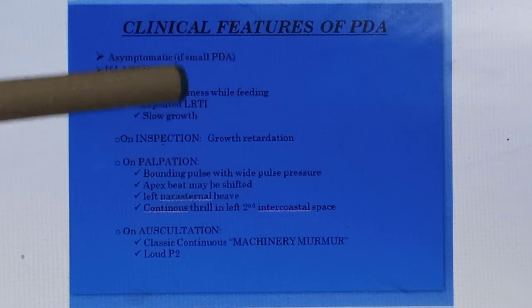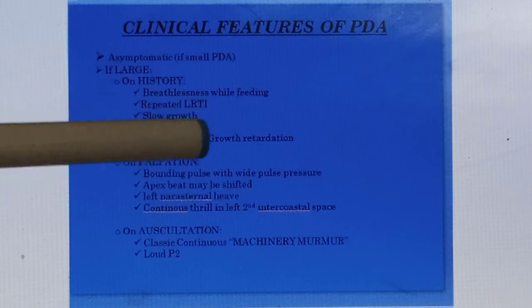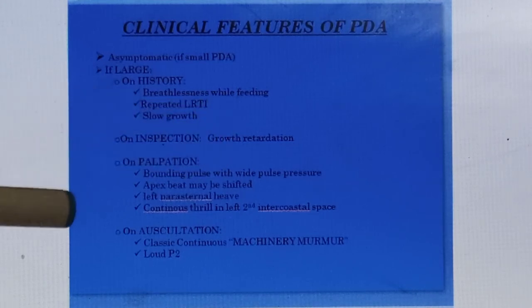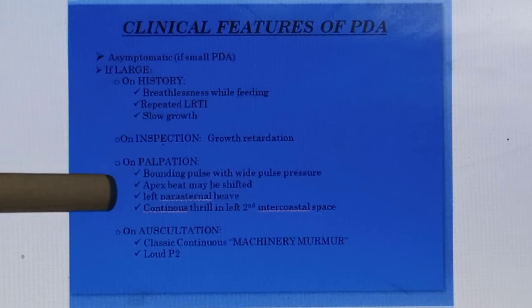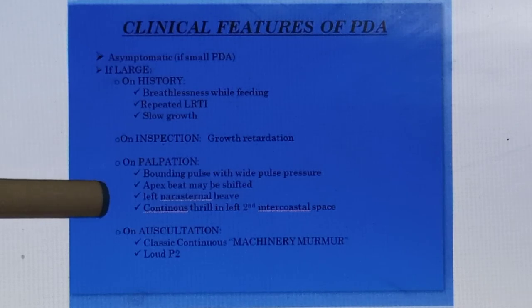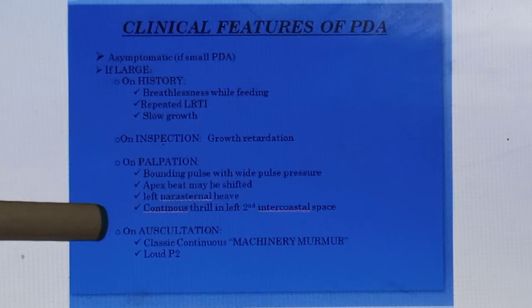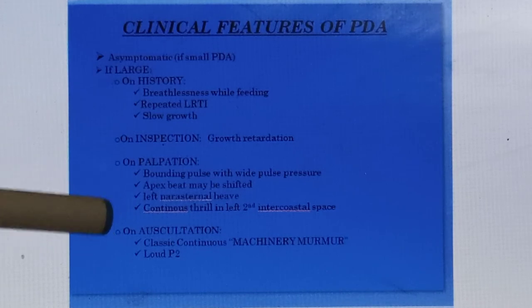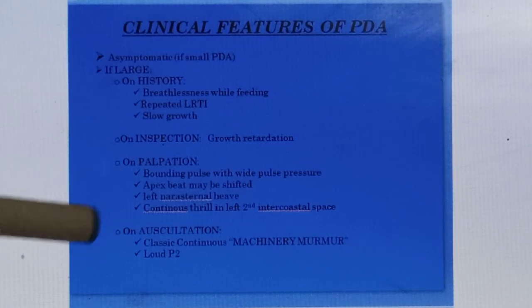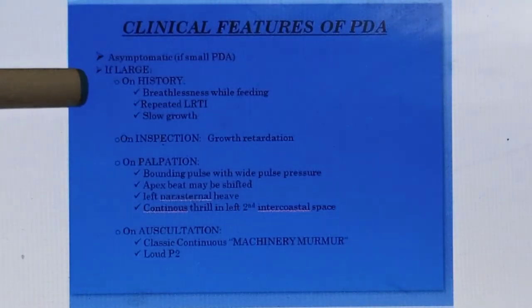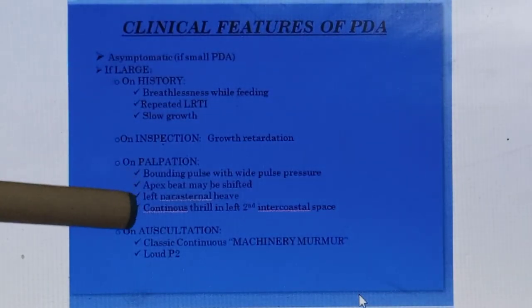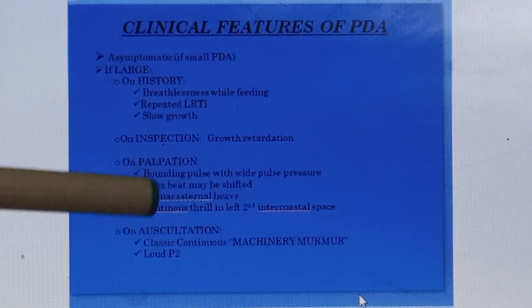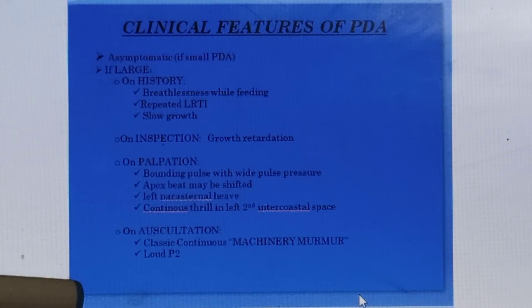Pulse pressure is the difference between systolic and diastolic pressure, and it becomes wide due to increased systolic pressure in PDA. The apex beat may be shifted because of cardiomegaly — hypertrophy leads to cardiomegaly. There is left parasternal heave and a continuous thrill in the left second intercostal space in the pulmonary area. On auscultation there is a classical continuous machinery murmur, which may be pan-systolic or pan-diastolic. This pan-systolic or pan-diastolic machinery murmur is a characteristic feature of PDA, and there is a loud P2 sound due to pulmonary hypertension.